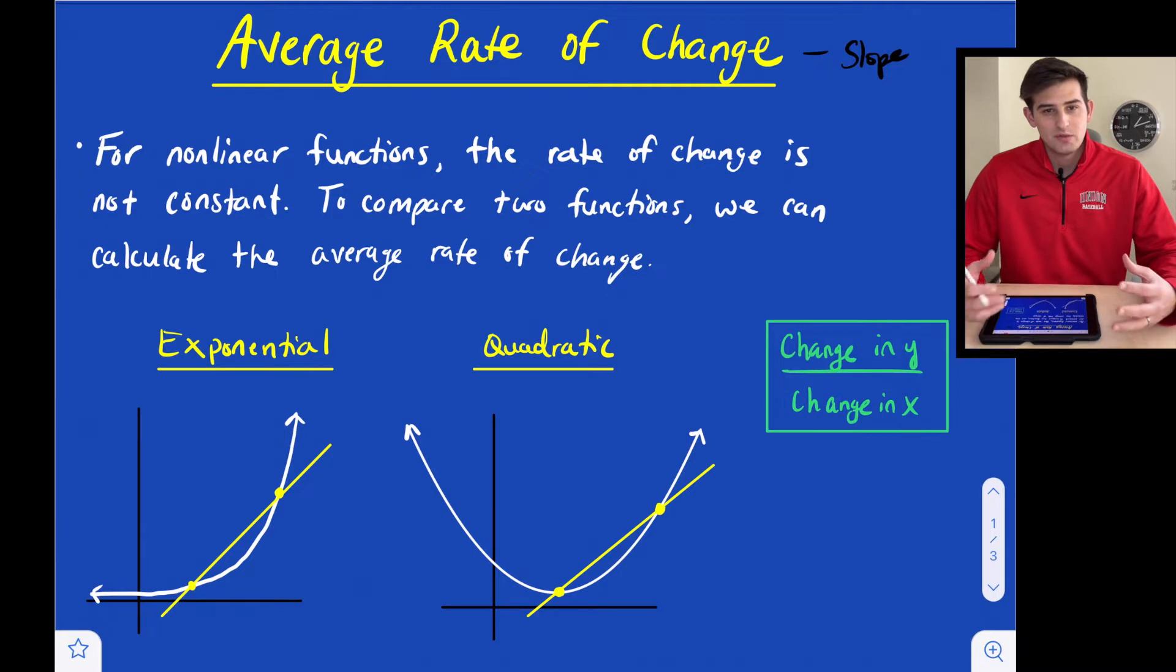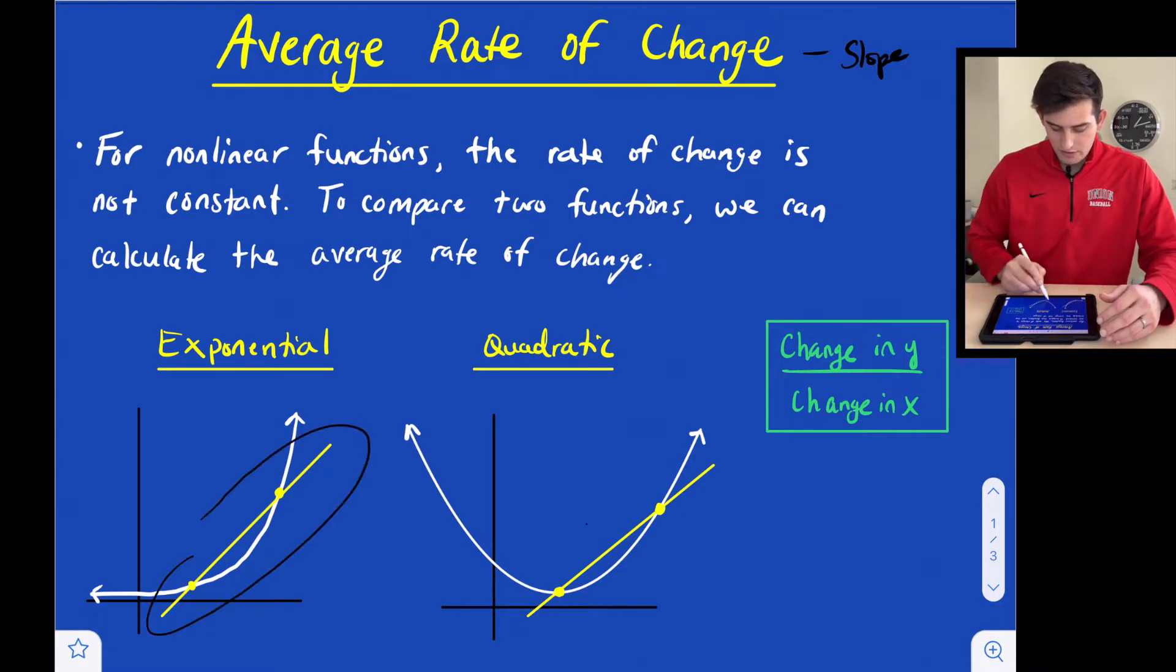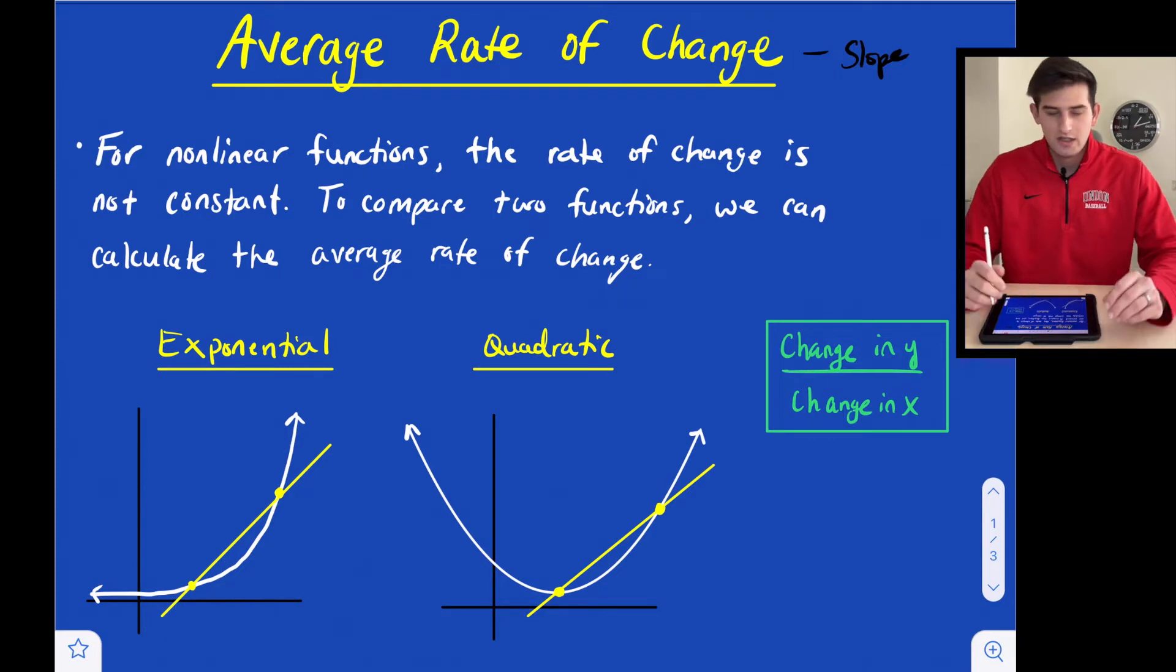Two functions we've looked at in our Algebra 1 course are exponential functions and quadratic functions. Both of those are nonlinear. If we see the diagram here, we see in white the graph of the function. For exponential, we see our exponential curve, and for quadratic, we see our parabola. This yellow line that has been drawn on here is a linear function, a line that goes through two points that are on our graph.